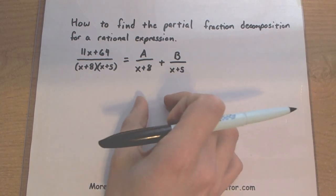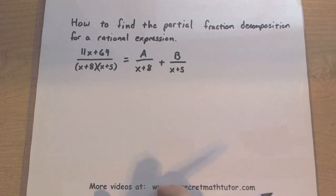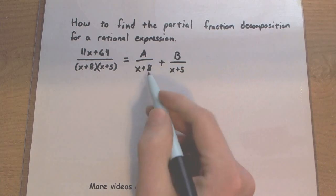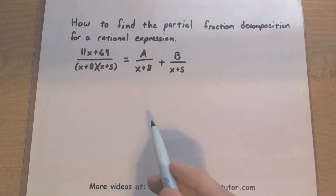If I really wanted to get these back together, first I'd need a common denominator. So I'd multiply this fraction on the top and bottom by x plus 5, and this one would need to multiply on the top and bottom by x plus 8.